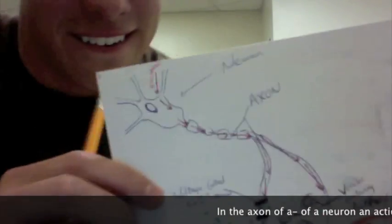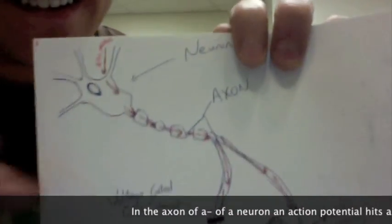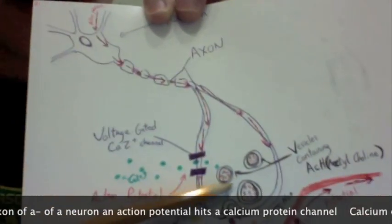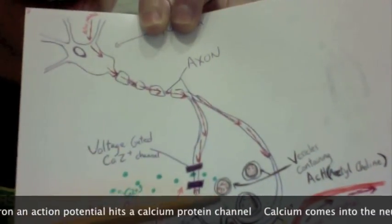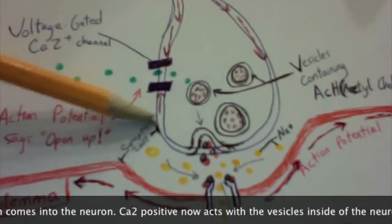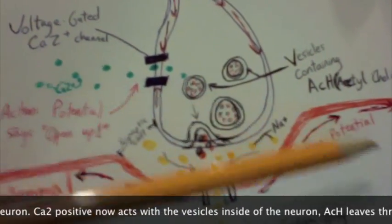In the axon terminal of a neuron, an action potential hits a calcium protein channel. Calcium comes into the neuron as Ca2+, which acts with the vesicles inside of the neuron.